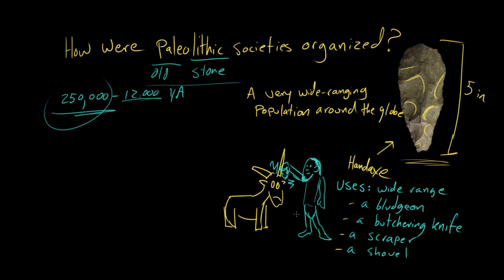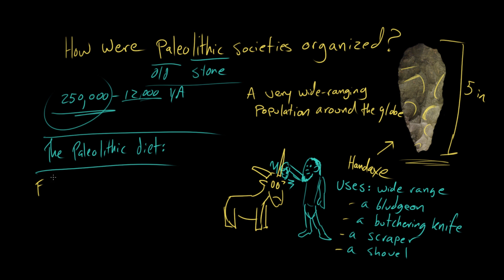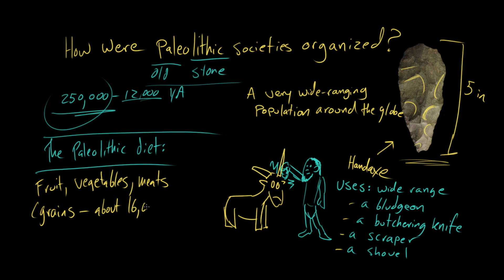What did early human beings eat? What's the Paleo diet? For most of this time period, people would be harvesting naturally growing fruits, vegetable matter, and animals that they could catch and kill. You don't really see grain being deliberately harvested — and this would be wild grain — until roughly 16,000 years ago. Prior to that, mostly naturally occurring fruit, vegetable matter, and animals. The first evidence for grain harvesting shows up in North Africa about 16,000 years ago, though we're always talking very approximate dates for this time period.